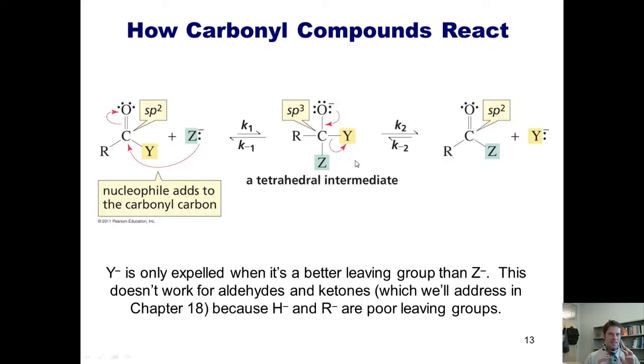For all of the compounds covered in this chapter, however, we have to remember that the nucleophile comes right into the crotch of the carbonyl. It kicks the pi electrons onto the oxygen, giving this tetrahedral intermediate. Then the minus charge on the oxygen comes down, kicks off this leaving group Y, and gives this kind of product.